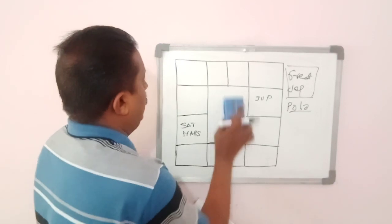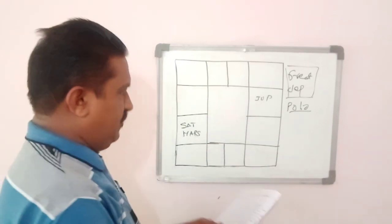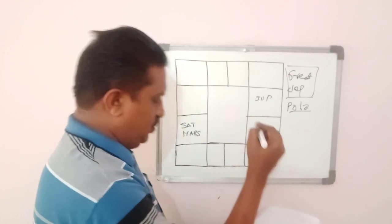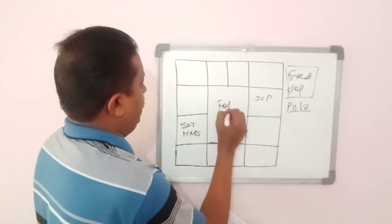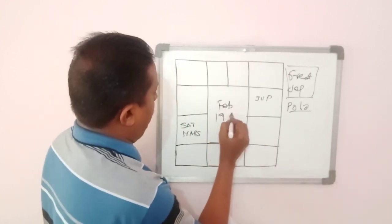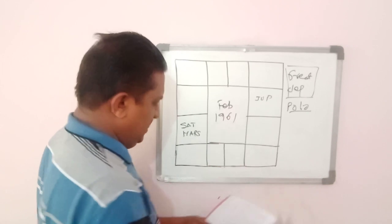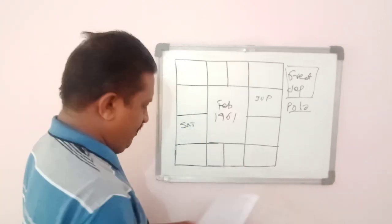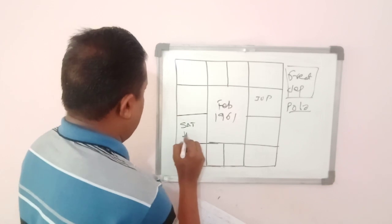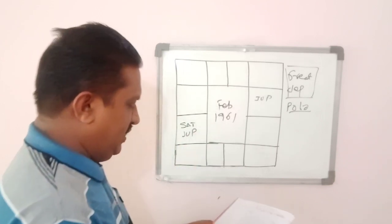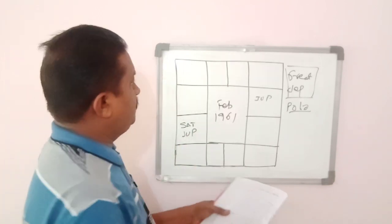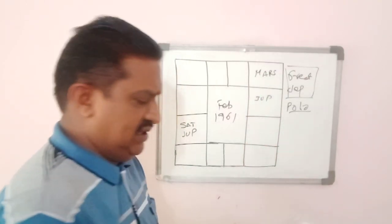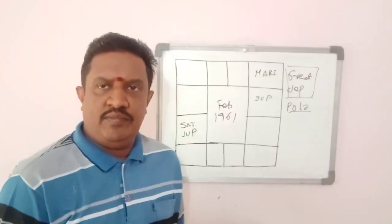Again, if we see the next transit of Saturn into Capricorn — if we catch the horoscope on February 1961 — Saturn is in Capricorn, Jupiter is situated with Saturn, and Mars is in Ardra Nakshatra in Gemini.